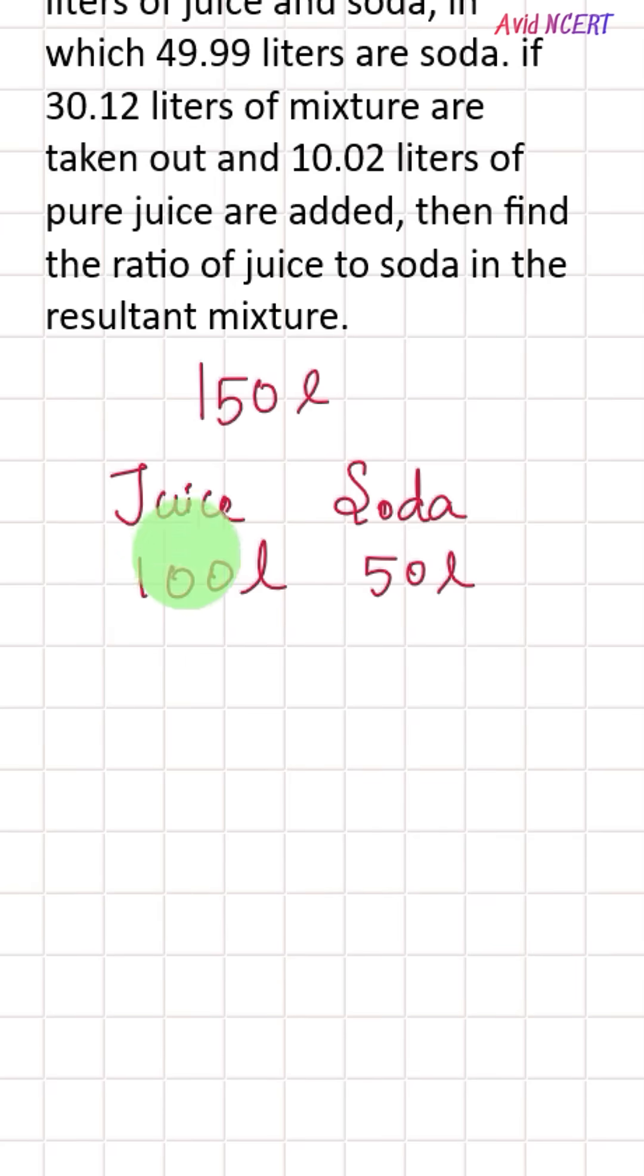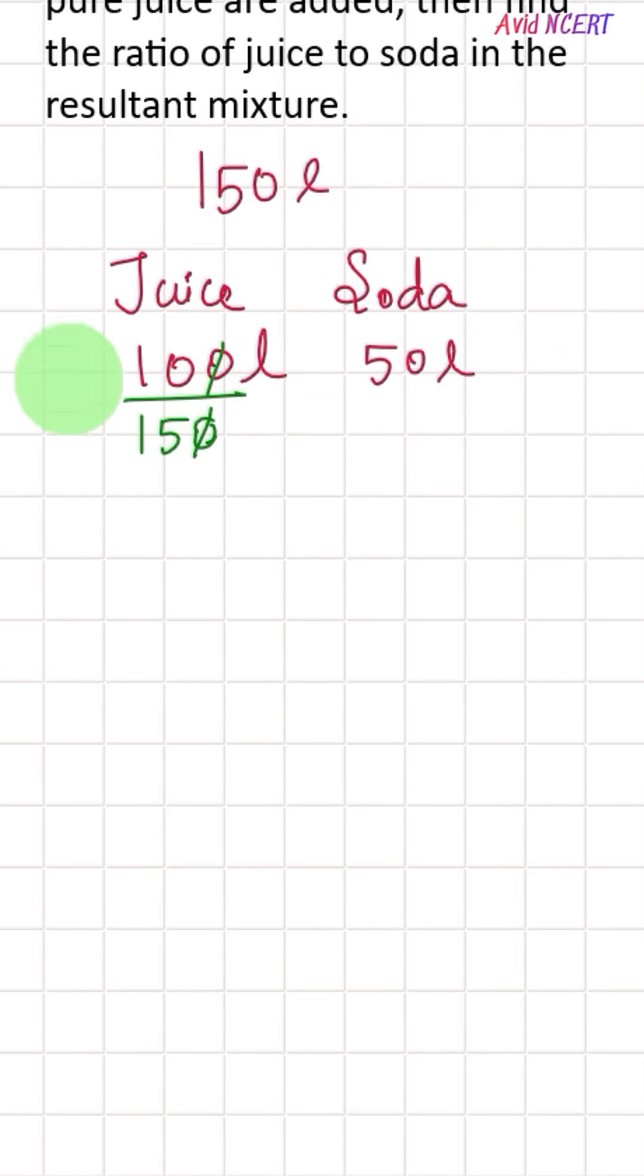To find out the ratio, we divide 100 by the total which is 150. Zeros get cancelled. 10 and 15 we can get in the 5 times table: 5 times 2 is 10, 5 times 3 is 15. So 2/3 of 150 liters is juice. And the remaining, which is 50 by 150, zeros get cancelled, 5 times 1 is 5, 5 times 3 is 15. So 1/3 of 150 liters is soda.